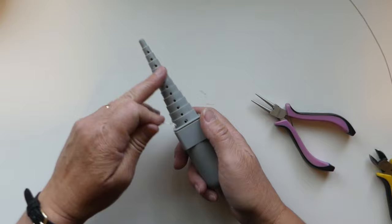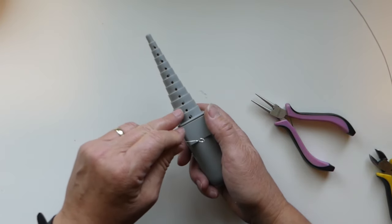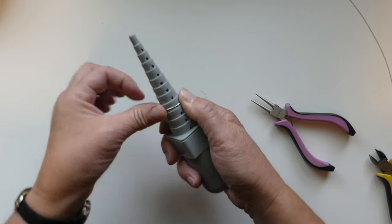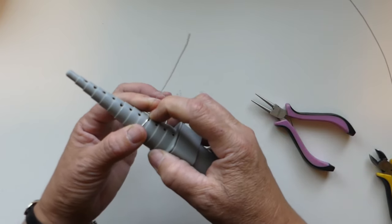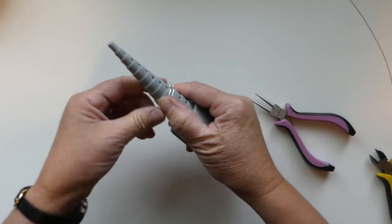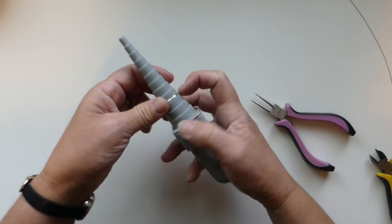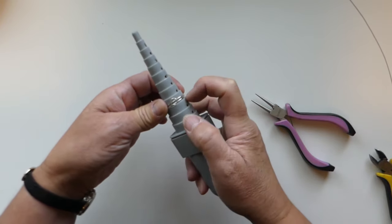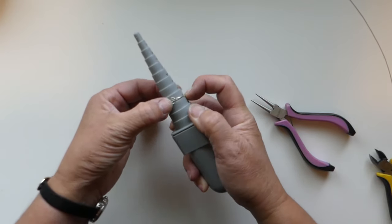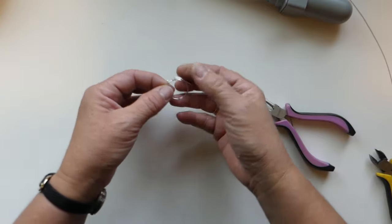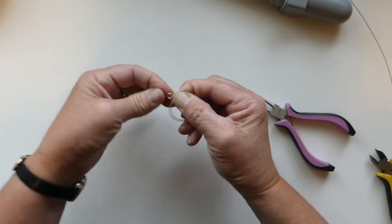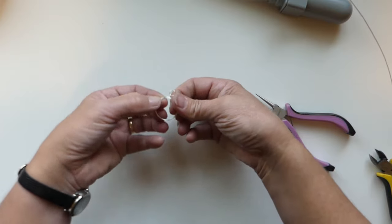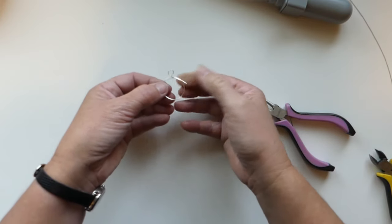And we want to take our mandrel and we want to decide how large we want our earring to be. Now I'm not a big fan of really big jewelry, so I'm going to go with just a medium size hoop loop. And then we just firmly wrap that around the mandrel, and then we take our loop - we're going to straighten that out so that it's more or less where we want it to be when everything is said and done.